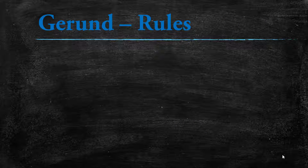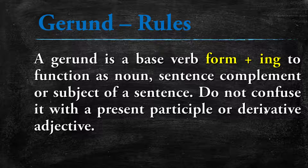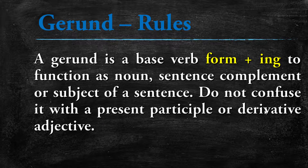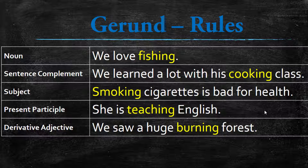Now for gerund rules. A gerund is a verb combined with '-ing'. A gerund is a base verb form plus '-ing' and it functions as a noun, sentence complement, or subject of a sentence. Do not confuse it with a present participle or derivative adjective. We use gerund as a noun — for example, 'We love fishing,' where 'fishing' functions as a noun. We can also use a gerund as a sentence complement — for example, 'His cooking class' where 'cooking' is the complement.